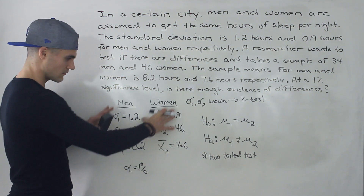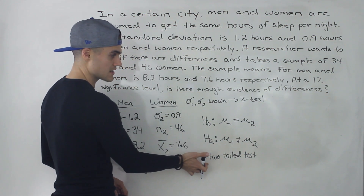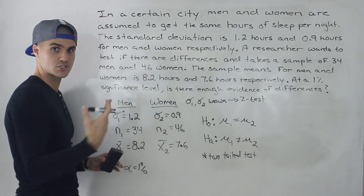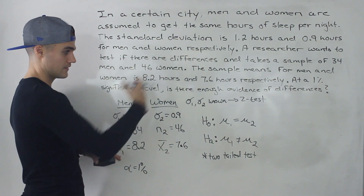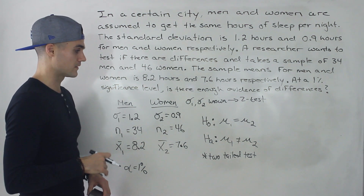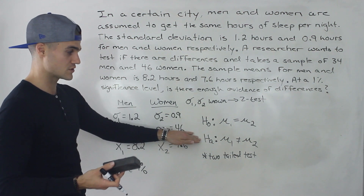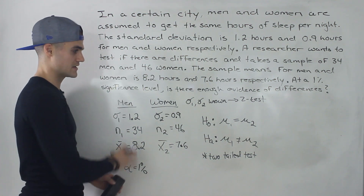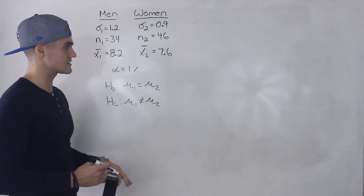From here, since we have all the information and the structure of the null and alternative, we know we're dealing with a two-tail test and we're going to be doing a Z test. My suggestion is to create two columns for both populations, put down the given info, set up your null and alternative, and then you can just work from those columns. You do need the scenario for your concluding sentence — whether to reject or fail to reject the null — but otherwise everything you need is right there. Now we go through the exact same steps as one-sample hypothesis testing.